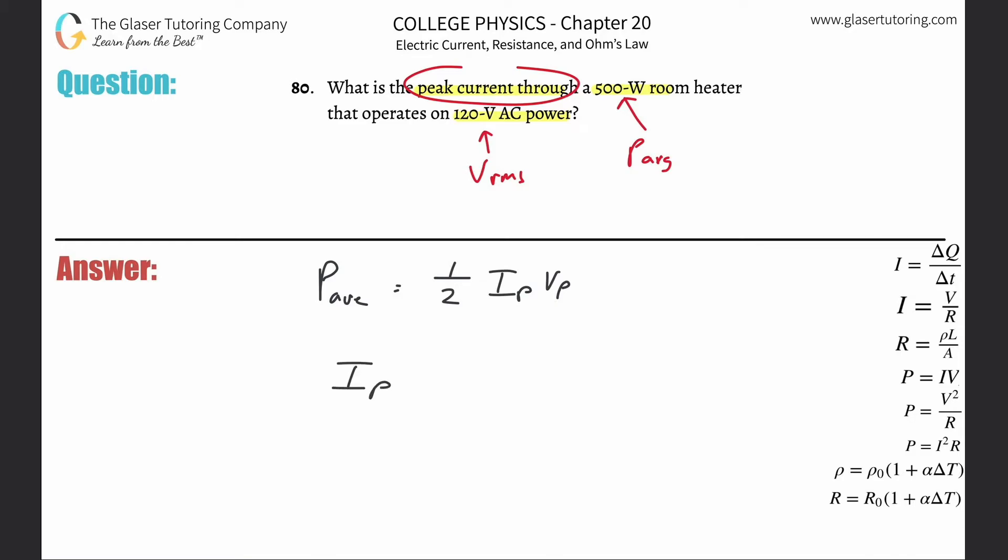In other words, we're realizing that this will become two times the average power all divided by the peak voltage. I don't know peak voltage though, but I know root mean square voltage. So what is the relationship between the two? We've seen this already: the root mean square is equal to the peak voltage divided by root of two.